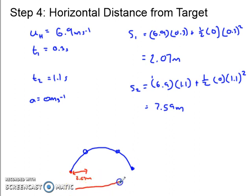Or if I was to have it 7.59 metres from the target, it should also, it would hit it on the downhill slope. Another thing I'd like to point out that's really nice and has let me know that I've done all my calculations correct, is if I add these two distances, 7.59 and 2.07,